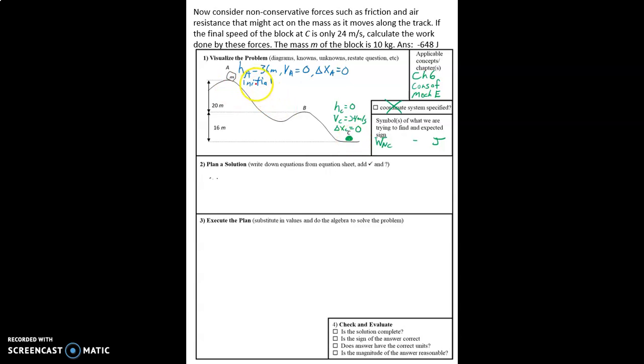So we're going to call our initial to be up here at point A, and our final is going to be down here at point C, and I'll label that. We're going to be solving for the work done, so that symbol is W sub NC, that's a capital W, so you don't confuse it with weight.